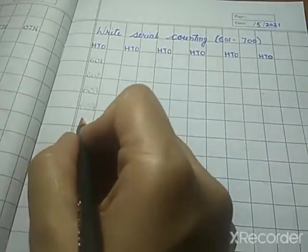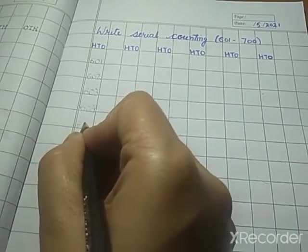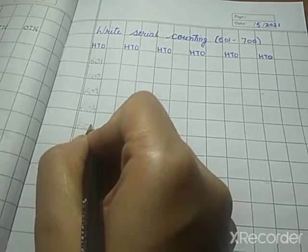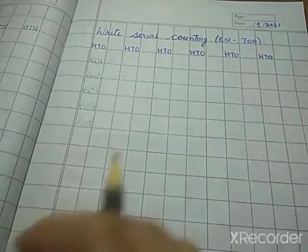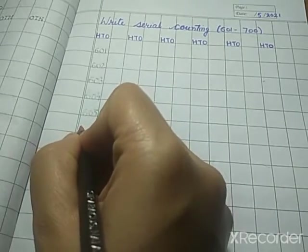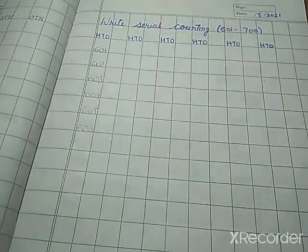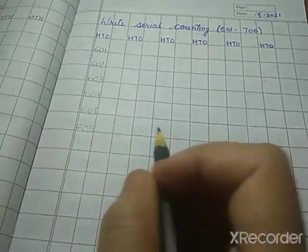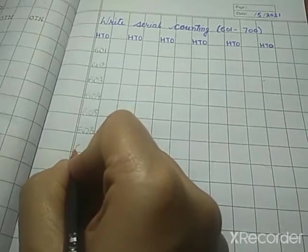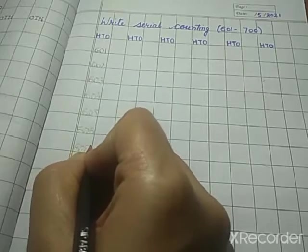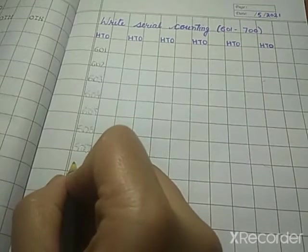Next, next comes 605. After 605 comes, the number comes 606. After 606, what will come? Yes, 607. Right? So we will write 607. After 607, we will write 608.